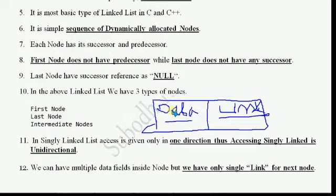For example, if we are creating a node for student information and we need to store roll number, name, and marks, then the data part can have three data fields: int roll, name, float marks. But the link part will have only one pointer, which stores the address of the next node.